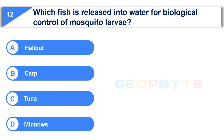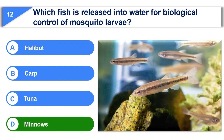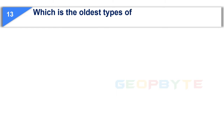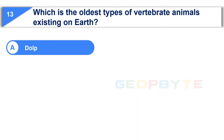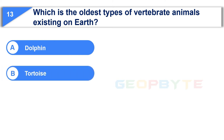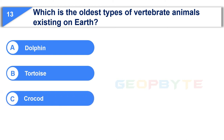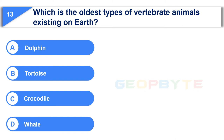Your time is up and the correct answer is Option D: Minos. The 13th question is: which is the oldest type of vertebrate animal existing on earth? Option A: Dolphin. Option B: Tortoise. Option C: Crocodile. Option D: Whale. Your time starts now.